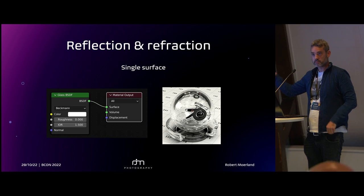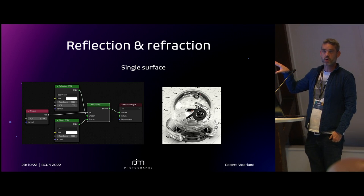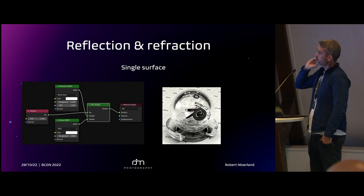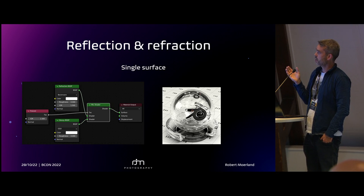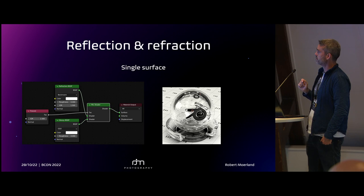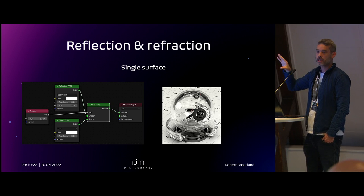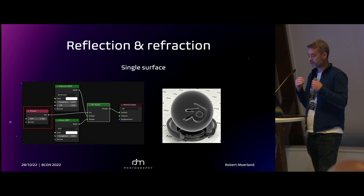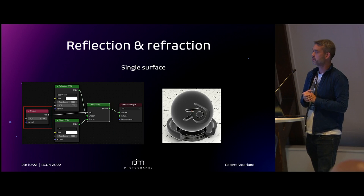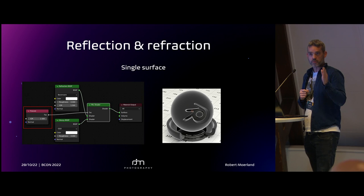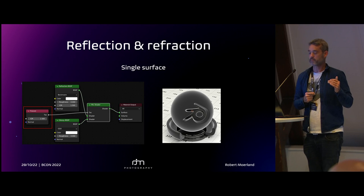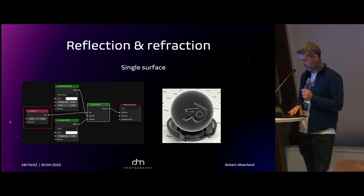You can substitute the glass shader for this small node group — it does exactly the same. On the top is a refractive shader, on the bottom is a glossy shader, and the Fresnel node dictates via a mix shader how much light goes where. The angle dependency: the steeper the angle, the more light will be reflected — which is exactly what Andrew Price said in his talk. This is really essential for photorealism. That covers thick objects.